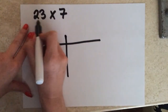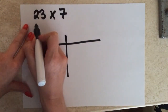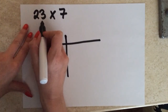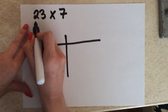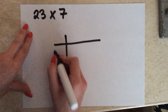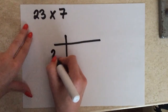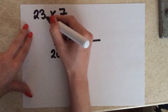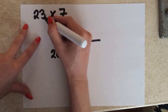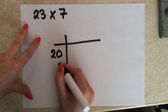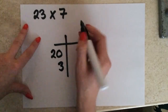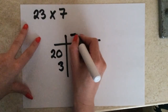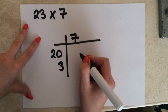So with this number 23, we need to break it down into tens and units. So the 2 is representing your tens — that's actually representing 20. So I'm going to write down 20 here. And then my 3 for my units I'm going to write underneath here. And then my other number, 7, I'm going to write that up here.